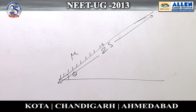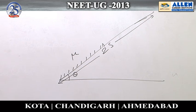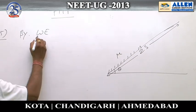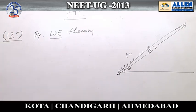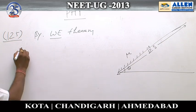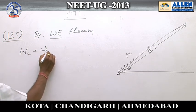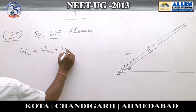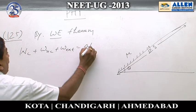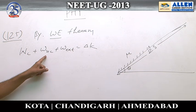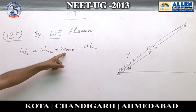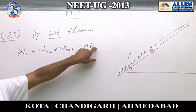By using the work-energy theorem, work done by all the forces is equal to change in kinetic energy. We consider all forces: conservative, non-conservative, as well as external forces. So, Wc plus Wnc plus W_external is equal to delta K, where Wc is work done by conservative forces, Wnc is work done by non-conservative forces, and W_external is work done by external forces.